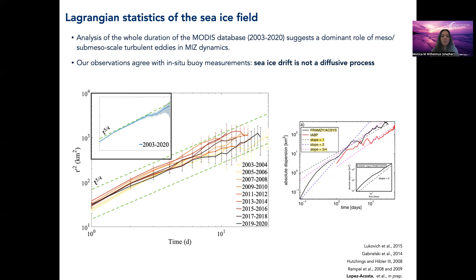For reference, I'm including the study by Gabrielski et al. in 2013, where they also observed a similar behavior for different in-situ field instruments — in this case the IABP and the FRAM Strait datasets. The difference between our observations and theirs is that, because of the number of sea ice floes we're able to observe at any given time, we have enough observations to resolve decadal trends. Whereas, because of the restricted amount of in-situ measurements, the Gabrielski study binned all available instruments over the entire time period.